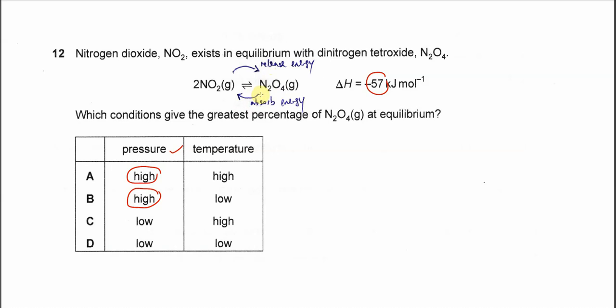If we want the equilibrium to shift to the right, we need to let it release energy. How do we let it release energy? By using a lower temperature.